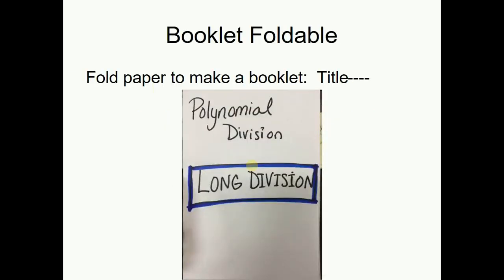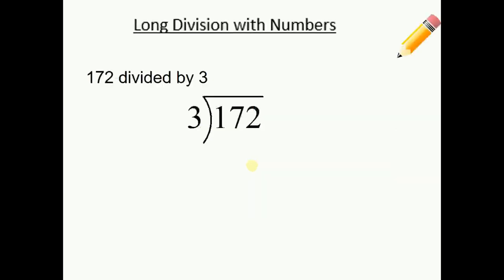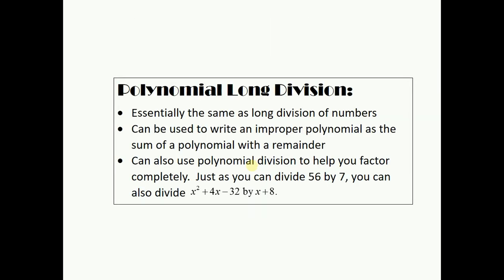First, you're going to want to fold the one that should say long division on the front with polynomial on there. Make a booklet, fold it in half. Inside should say this — so make sure the one you're folding and labeling says this on the inside. For polynomial long division, essentially you're going to be long dividing numbers, but they're going to have x's in them. Basically you're going to write an improper polynomial as a sum of a polynomial with a remainder, which helps us divide out factors completely. So if you can divide 56 by 7 longhand, you can also divide x squared plus 4x minus 32 by x plus 8.